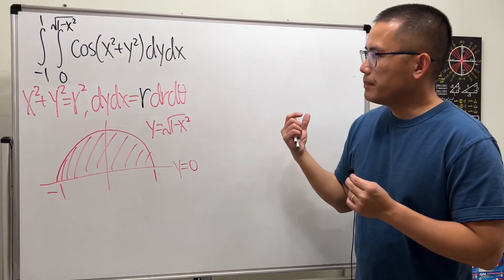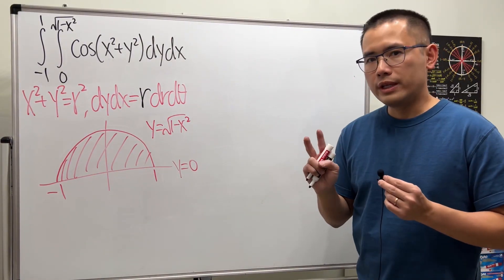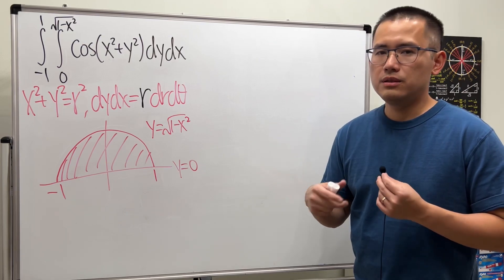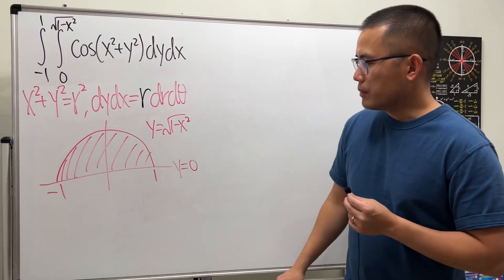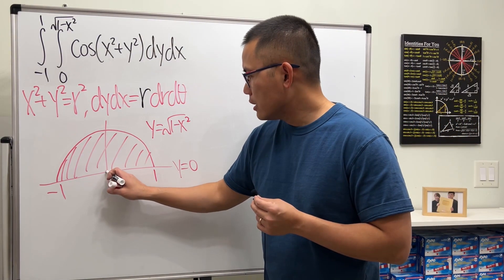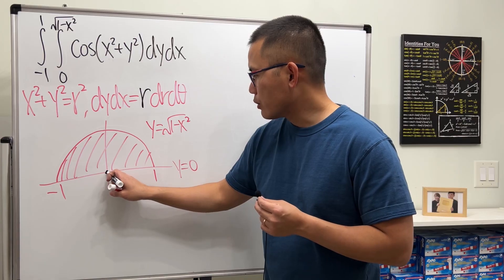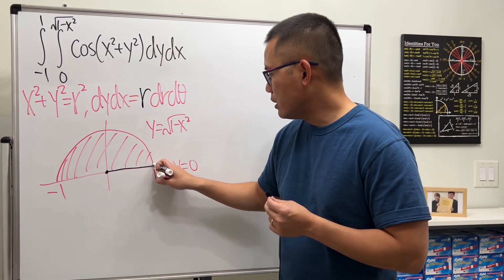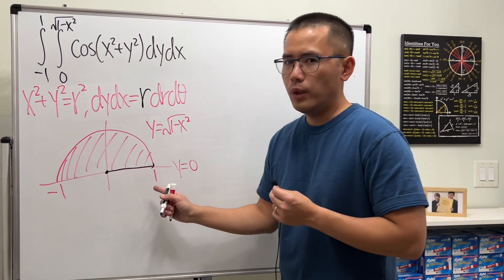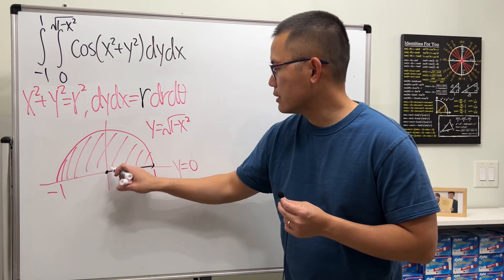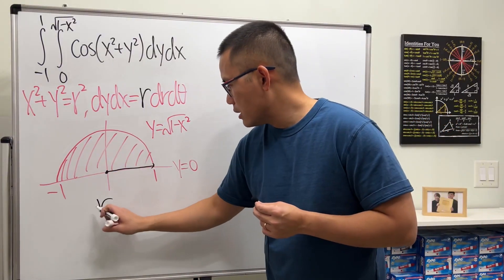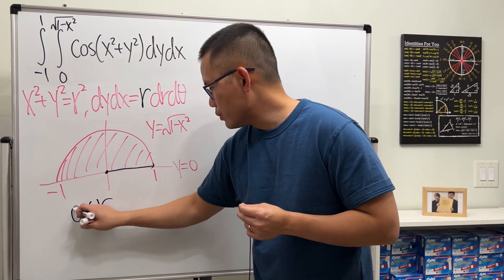Now in the polar world, we care about two things: r, just think about it as a distance, and θ, which is the angle. So r, you start with the origin, you have to go out to here, and the radius is always going to be 1. Every time you go out is 1, like this, so r ranges from 0 to 1.